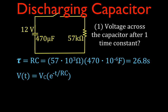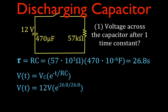Now we can use our equation. The voltage across the capacitor with respect to time is equal to the initial voltage across the capacitor times e raised to the power of minus t over RC, where RC is our time constant and t is the time at which we want to know the voltage. In this case, we want to know after one time constant, so the time t is 26.8 seconds, because that's one time constant, and RC is also 26.8.